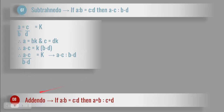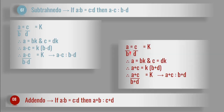Eight, addendo property. If A is to B is equal to C is to D, then A plus C is to B plus D. Here A over B is equal to C over D is equal to K. By comparing, A is equal to BK and C is equal to DK. Adding these two equations, A plus C is equal to K times B plus D. Therefore, A plus C over B plus D is equal to K, so A plus C is to B plus D. Thank you.